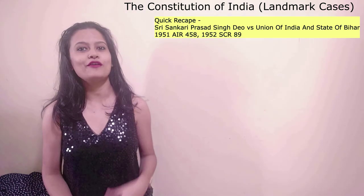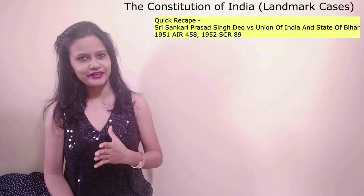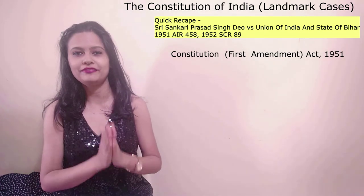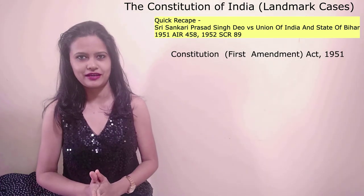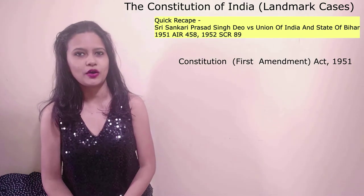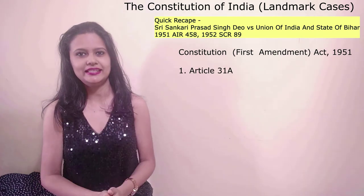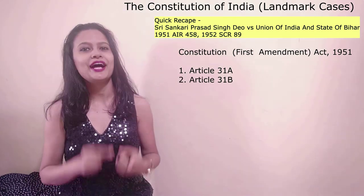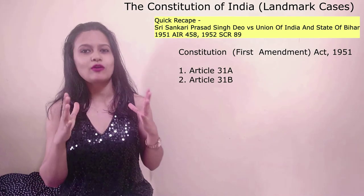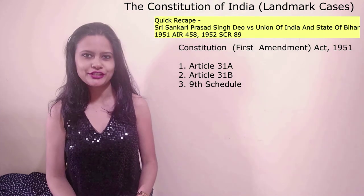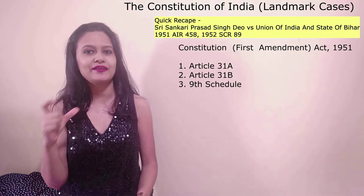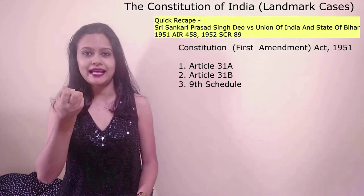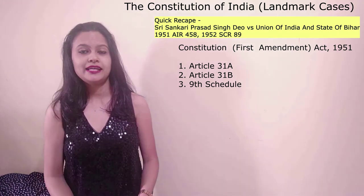In the previous video of Sankari Prasad versus Union of India, we read about the First Constitution Amendment Act of 1951. The changes brought by this act included the insertion of Articles 31 Clause A and 31 Clause B. Apart from these two articles, it also inserted the 9th Schedule to the Constitution of India with 13 different acts or regulations that would be outside the purview of judicial review.